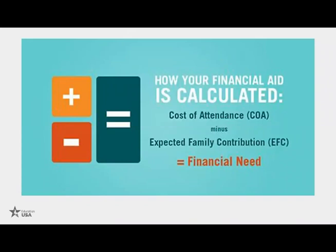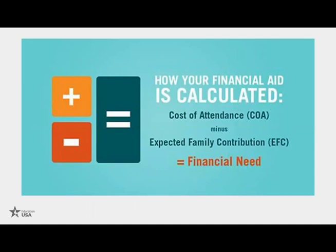Direct costs plus indirect costs equals cost of attendance. To calculate how much you need, a school takes the total cost of attendance and subtracts your Expected Family Contribution. For example, if on your CSS Profile you say your family can afford one thousand dollars per year and the total school cost is seventy-seven thousand dollars, the school subtracts your EFC from your cost of attendance to determine your financial need. However, the school may recalculate based on your income statements and bank statements — they may determine you can actually afford two thousand dollars.